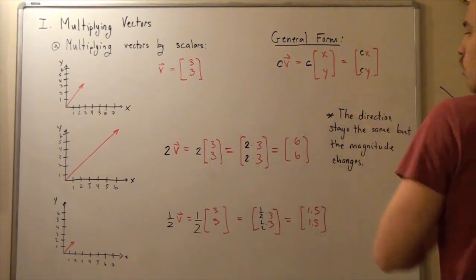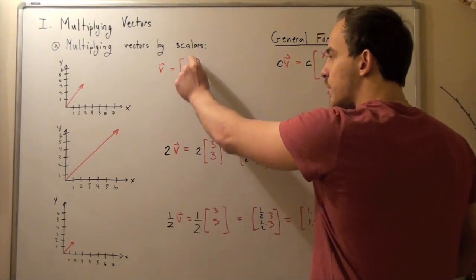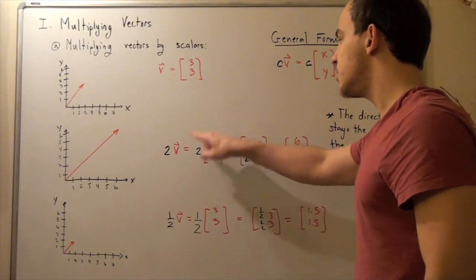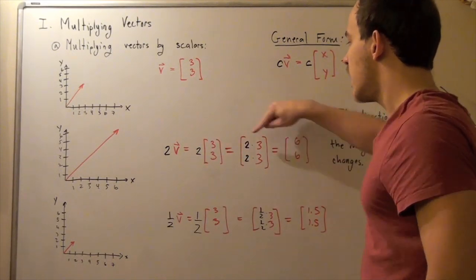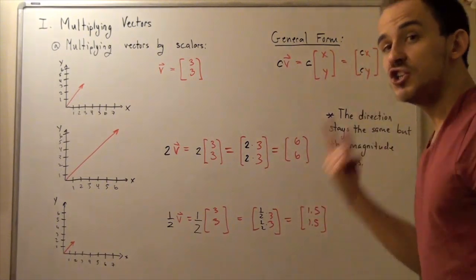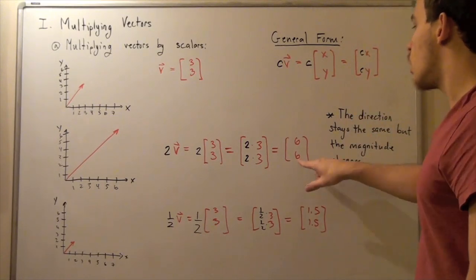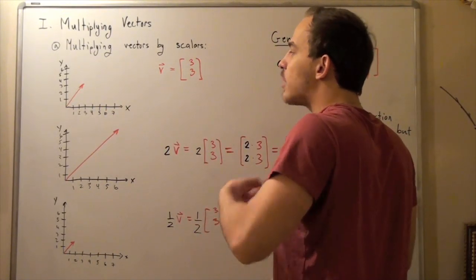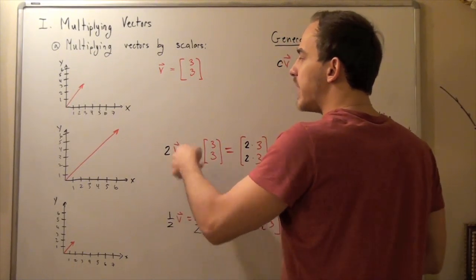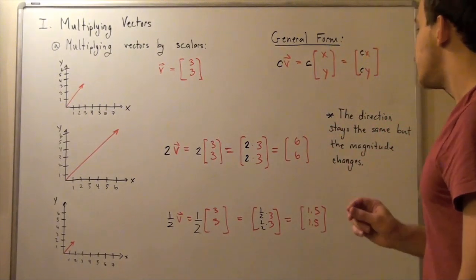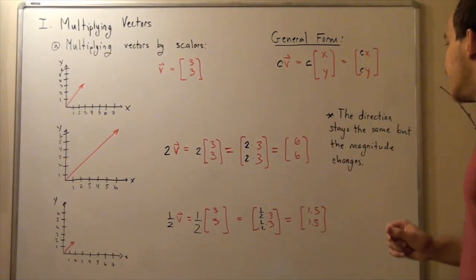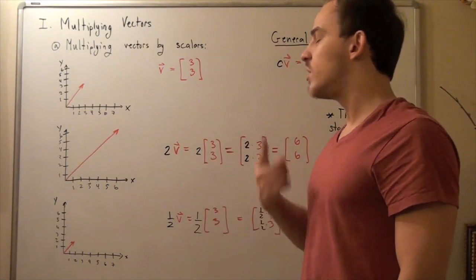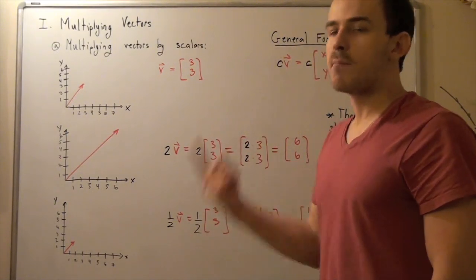If we use this exact form, we get 2 times our vector V, which gives us 2 times our matrix. We bring the 2 inside and distribute to each coordinate. We get 2 times 3 and 2 times 3, so our new x-coordinate is 6 and our new y-coordinate is also 6. If we graph it, the vector points in the same direction, but the magnitude is twice as much. Any time we multiply a scalar by a vector, the direction stays the same but the magnitude changes — unless the scalar is 1, in which case both direction and magnitude stay the same.